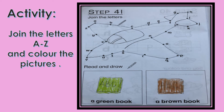Let's proceed to our activity. Join the letters from A to Z and color the pictures. Read and draw a green book inside the box. Next, draw a brown book inside the box.